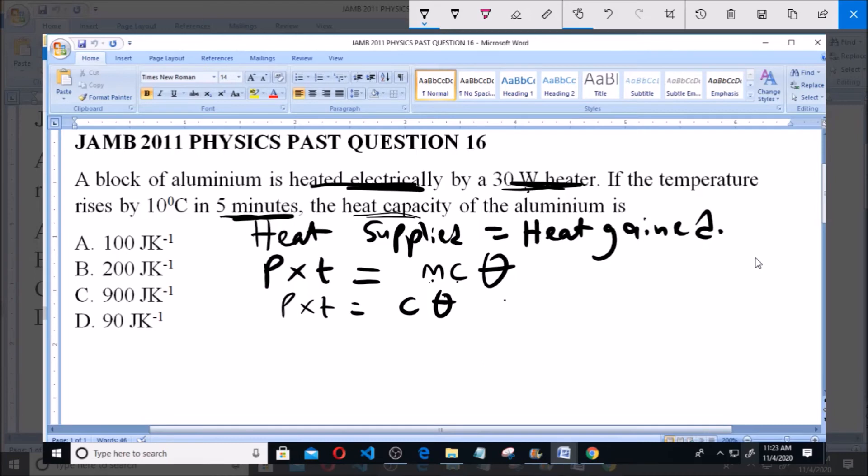Now, PT, that is 30 watts, 30 times 5. Now, you have to convert this to seconds, so you multiply it by 60.